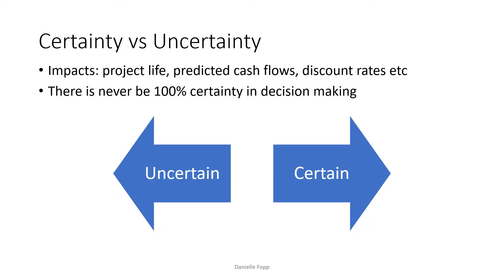Certainty versus uncertainty: the condition of certainty is an idealised situation where each condition you are assessing is 100% certain. Concerns on the certainty and accuracy of estimates of project life, predicted cash flows and opportunities are all relevant for a project appraisal. Even once a contractor has been awarded the contract, there will still not be 100% certainty in costs and timelines, as each contractor will have their own conditions — for example, extensions of time and variations to costs.